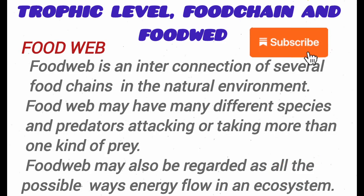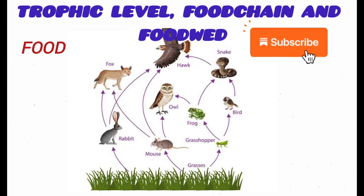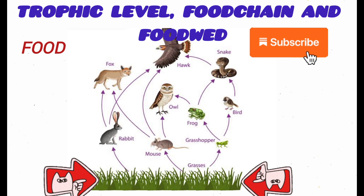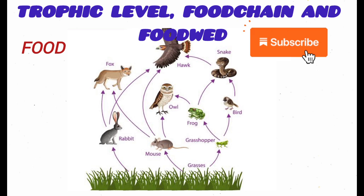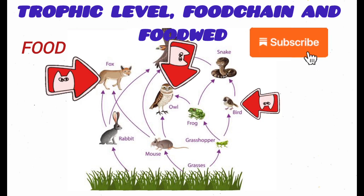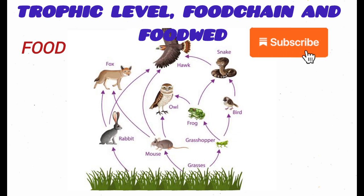Now let's talk about the Food Web. A Food Web is all the possible pathways through which energy flows in an ecosystem. It can also be referred to as all the interconnections of several food chains occurring in a natural environment or in a particular ecosystem. In this diagram, the producer is the plant, and several organisms are feeding on the plant, and several organisms are also feeding on the primary consumers. There are many food chains occurring in this environment, and this combination of several food chains is regarded as the Food Web.